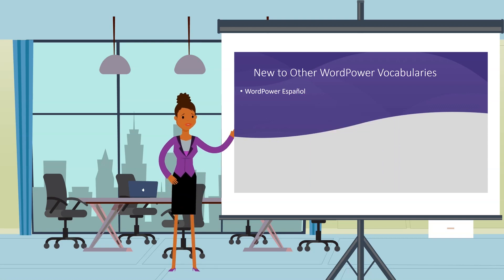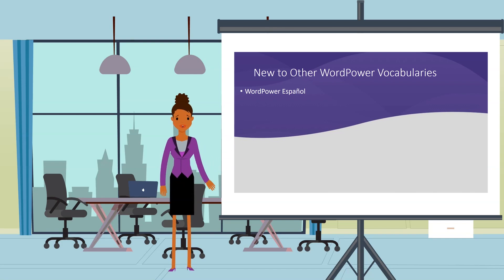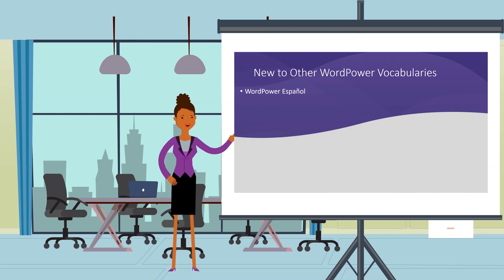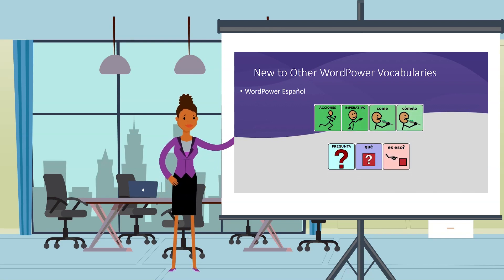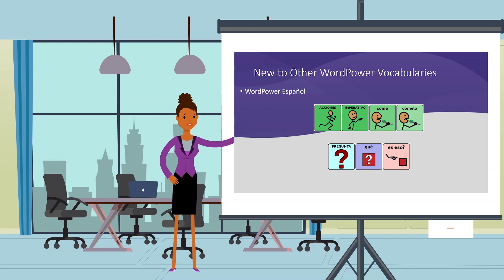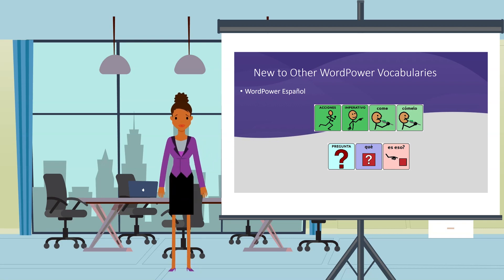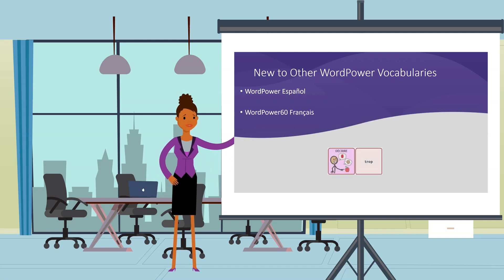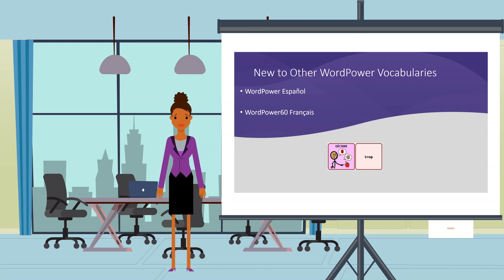A few words and phrases have been added to other WordPower vocabularies. Let's take a look. In the WordPower 25 Español files, the imperative "Cómelo" has been added. Additionally, the question "¿Qué es eso?" has been added to the Preguntas page. Finally, in WordPower 60 Français, the word "Troupe" has been added to the Describe page.